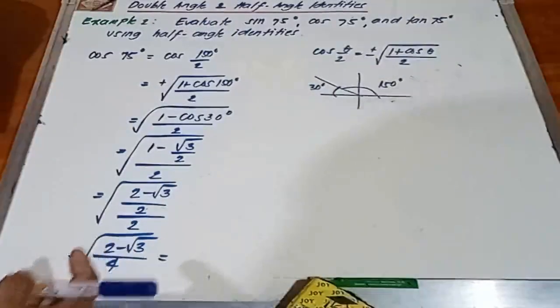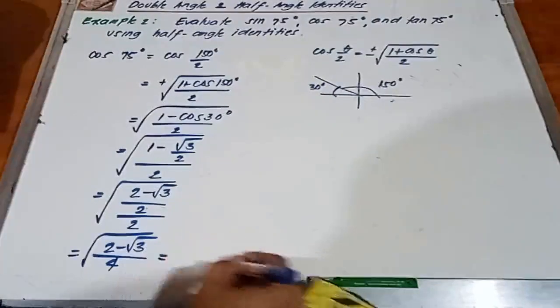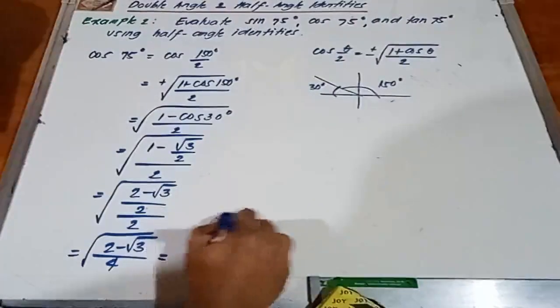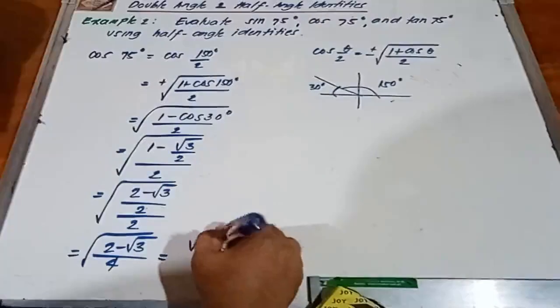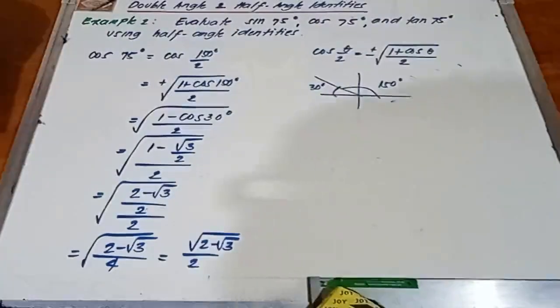Then, kunin natin yung square root ng top, square root ng bottom. So we have square root of 2 minus square root of 3 over 2. So yun ang sagot natin.